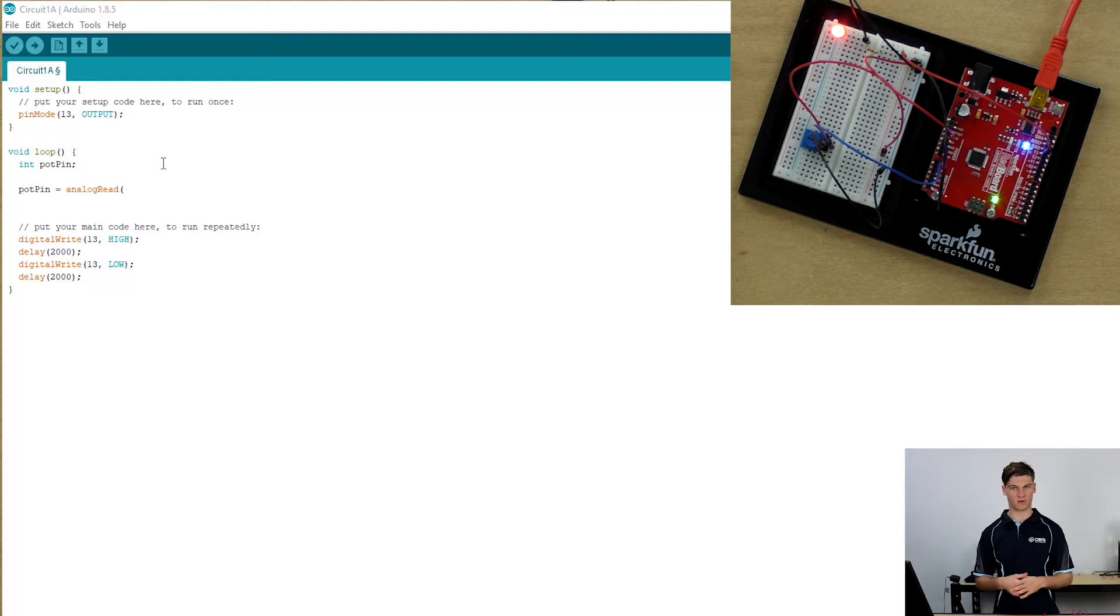Using that analog read function, it'll give us more degrees of freedom in what it's registering. We're going to go analog read A0. That means that every time this loop is done, it's going to read in that value.